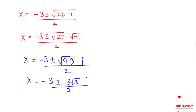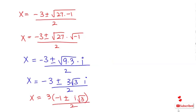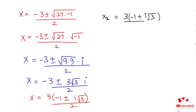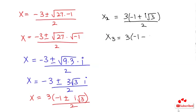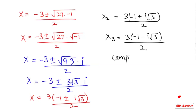Now I can take the common factor of 3 here. So x equals 3 times bracket minus 1 plus or minus i root 3 over 2. So I will get two more values of x: x2 equals 3 times bracket minus 1 plus i root 3 over 2, and x3 equals 3 times bracket minus 1 minus i root 3 over 2. So these are our complex solutions and x1 equals 3 is the real solution.